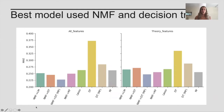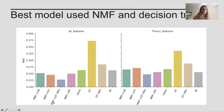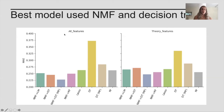The best model was consistent across mean absolute error, root mean square error, and variance explained. As you can see, with all features on one side versus theory-selected features on the right, the best model was Non-negative Matrix Factorization compressing down to five features, which were then input into a decision tree. Interestingly, this model performed best on both feature pools, but there is clearly something additional being discovered in the all-features pool beyond what we already know from the literature.